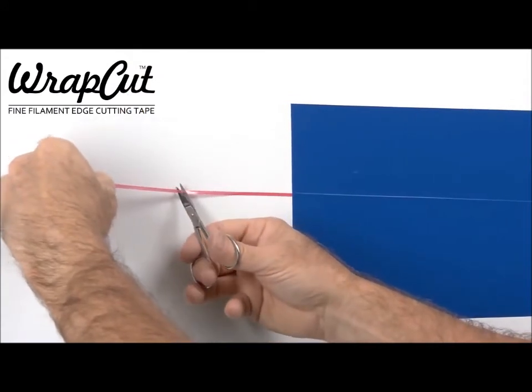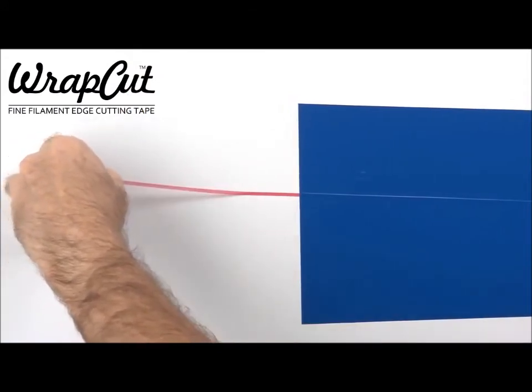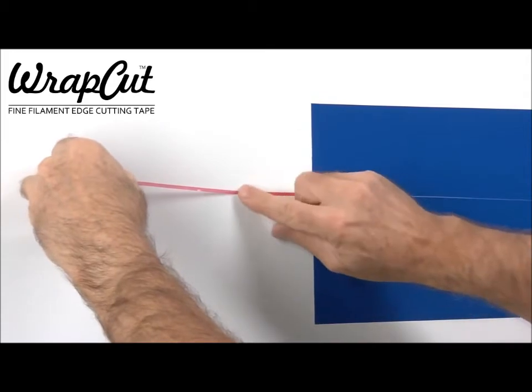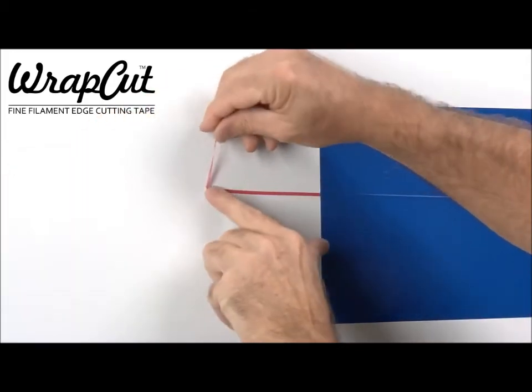Watch carefully to witness a simple method for releasing the cutting filament from the tape. With a sharp scissor, cut partway through the tape, freeing the end portion to be used as a pull tab.